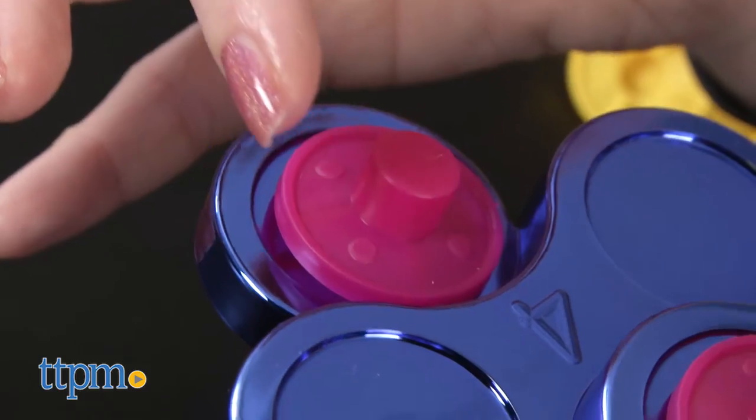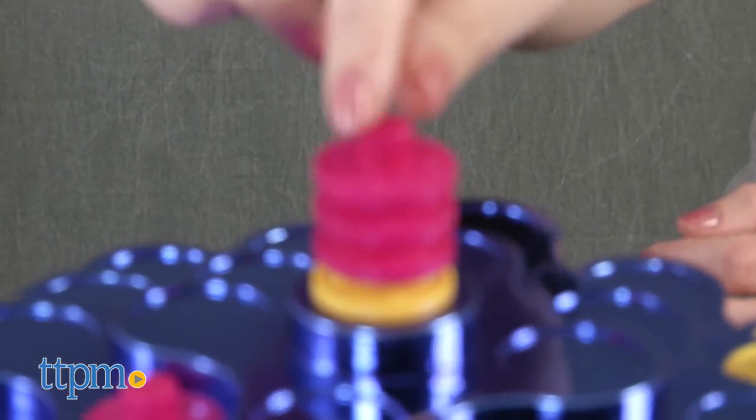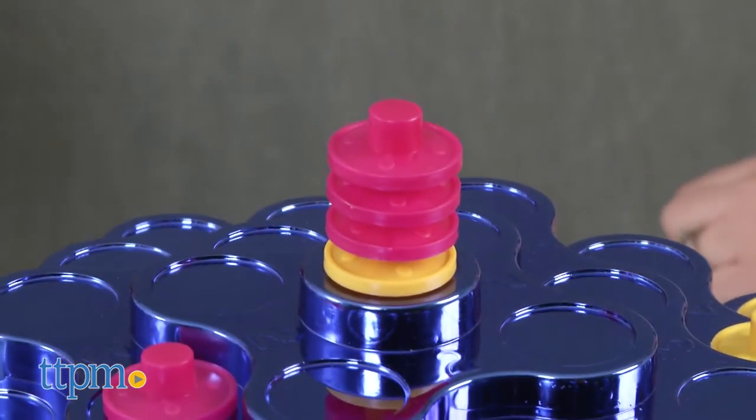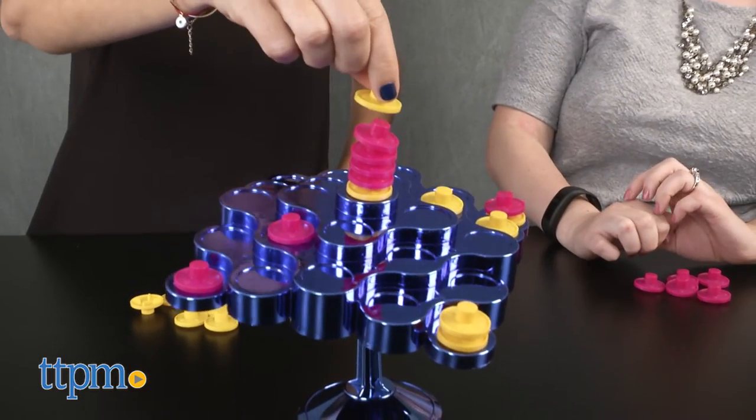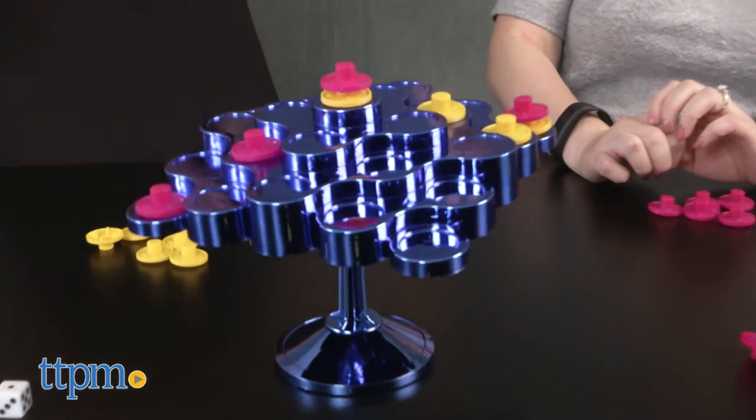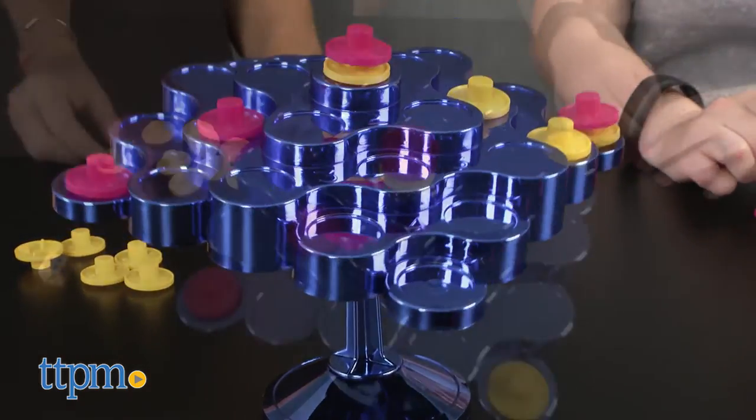Points are earned by stacking pieces three or more pieces high or completing rows of five or more. But be careful because as more pieces are added, the topple board tips and sways and all the pieces may come toppling down.